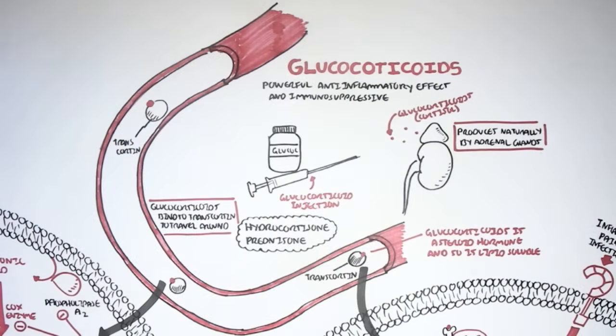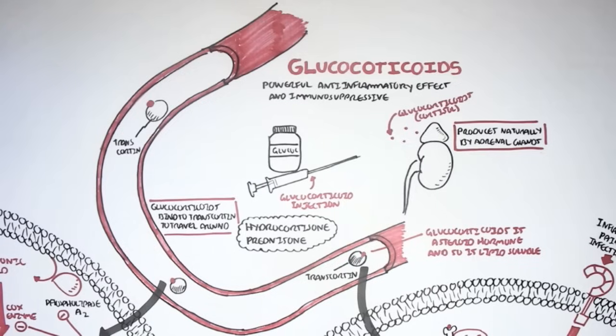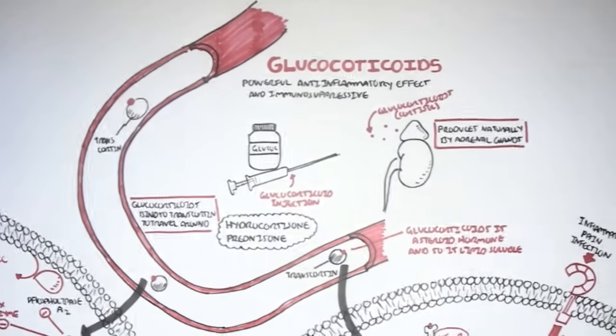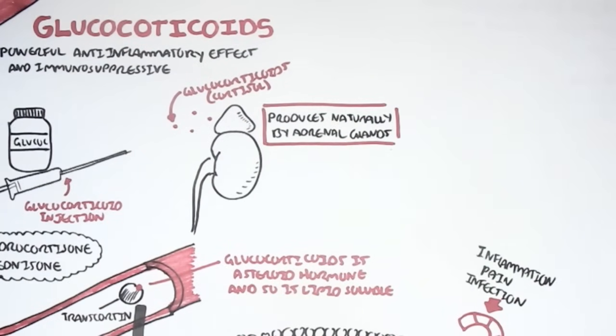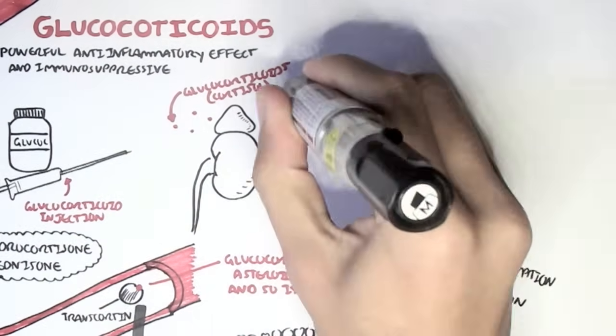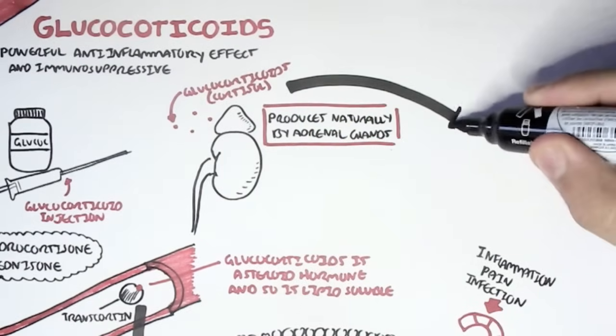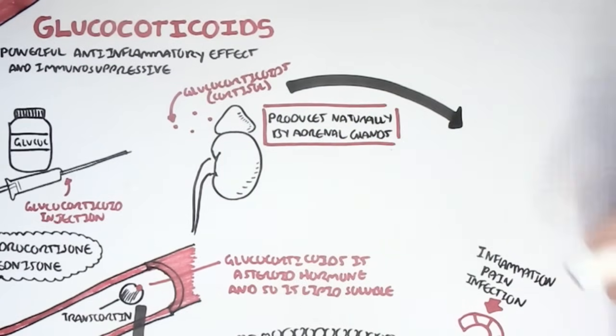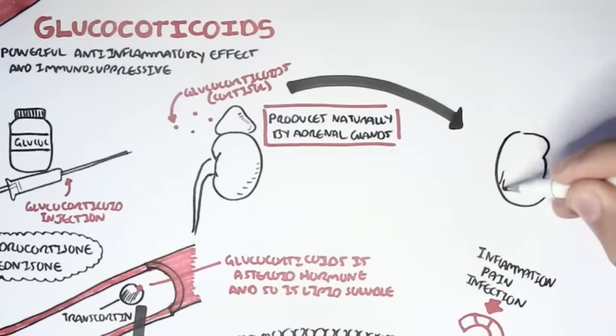Glucocorticoids, remember, travel around the body bound to carrier molecules, such as transcortin. Another use of synthetically made glucocorticoids, such as hydrocortisone and prednisone, is as a replacement therapy.